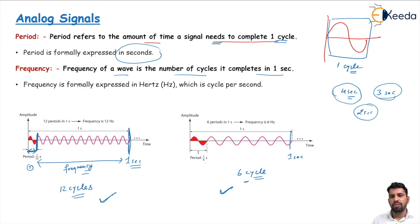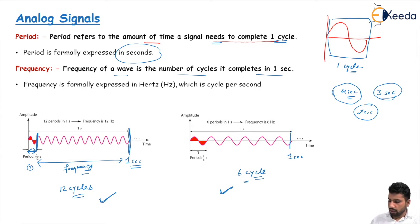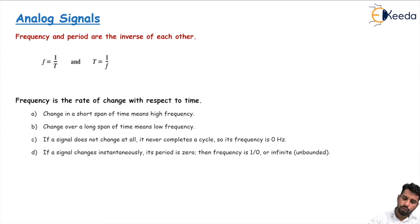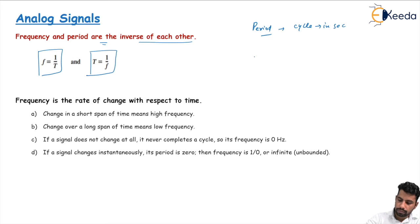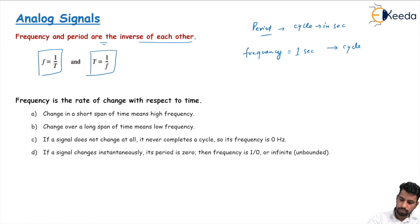Frequency is mainly expressed in Hertz, which is cycles per second. Frequency and period have a very important inverse relationship — frequency and period are the inverse of each other. Period means how many seconds to complete one cycle, and frequency means how many cycles are completed in one second. So frequency is inversely proportional to period.